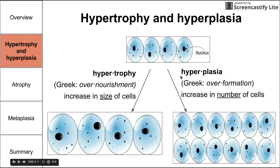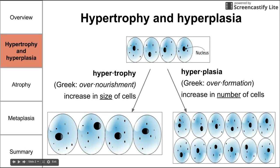The second way an organ can become enlarged is through hyperplasia, which literally means over-formation of cells, so the cells are becoming more numerous. On the right side of the diagram, you can see the cells multiplying as they go from four cells to twelve cells — an increase in the number of cells. This is in contrast to the cells increasing in size during hypertrophy. One last thing to note is that oftentimes hypertrophy and hyperplasia occur together, so when an organ increases in size in the body, we are really seeing an increase in both the size and number of cells.